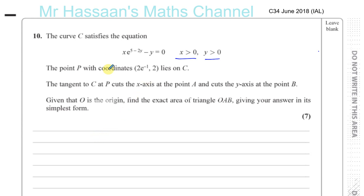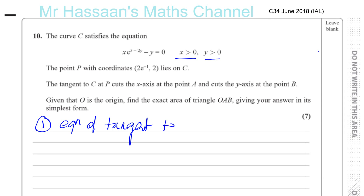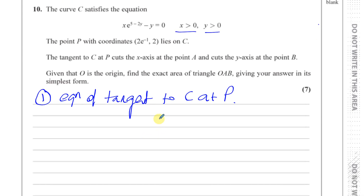Seven marks here. So the first objective is to find the gradient of the tangent to the curve at point P. We need to find the equation of the tangent to C at P. That means we have to find the gradient. We need a point on the line, which we have. So we have to find the gradient of this function: x times e to the power of 5 minus 2y, minus y equals 0.